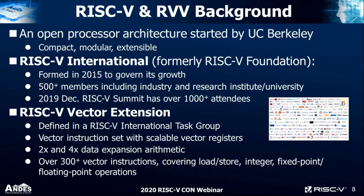The RISC-V vector extension specifically is being defined in the RISC-V International Task Group. It includes vector instruction sets with scalable vector registers, including 2-to-4x data expansion of arithmetic, so vector extensions can be used to increase precision. These include over 300 vector instructions covering loads and stores, integers, and floating-point operations.